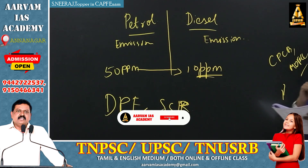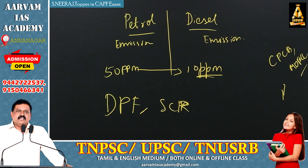Second question: Gorgam (guar gum) plays a significant role in the extraction of shale gas. India is the largest producer of Gorgam in the world. So the answer is option C: 2 and 3.